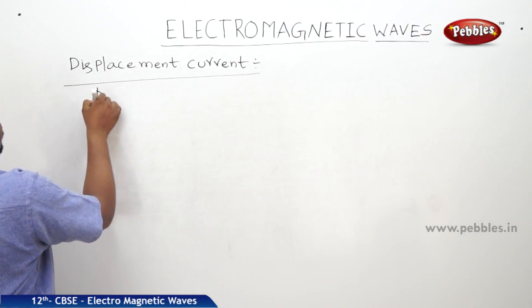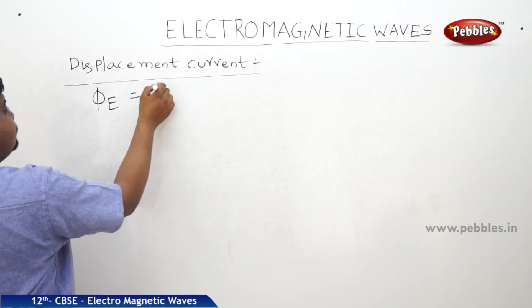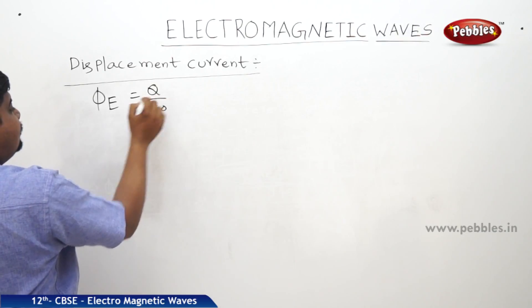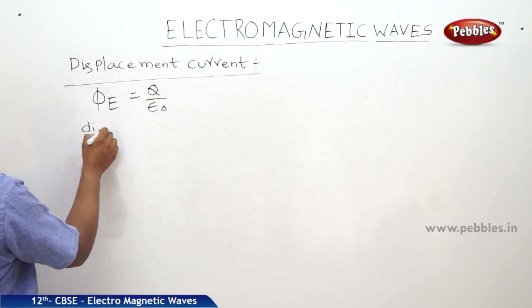So, phi E is equal to q by epsilon naught, differentiating on each side.